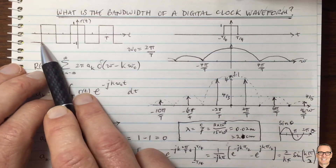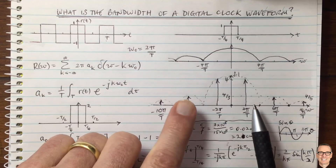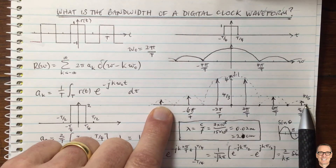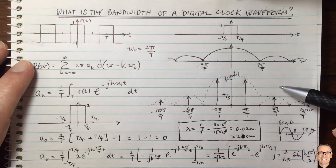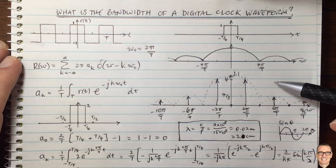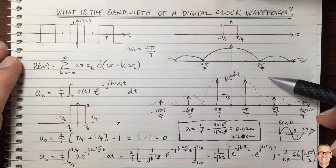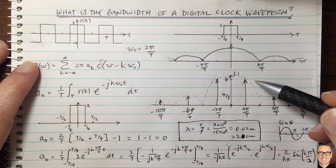This has given more understanding of how a digital clock has discrete frequency components in the frequency domain and how this relates to the design of circuit boards. If this video has been helpful, please give it a thumbs up. Check out the links in the description for a full categorized list of videos on the channel, and subscribe for more videos.